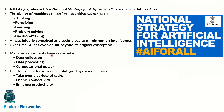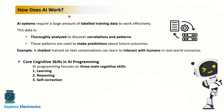Major advancements have occurred in data collection, data processing, and computational power. That's why wherever data collection and decision making is required, AI has already been adopted. Due to these achievements, intelligent systems can now take over a variety of tasks, enabling connectivity and enhancing productivity. Platforms like Uber are using data effectively to give the best results.